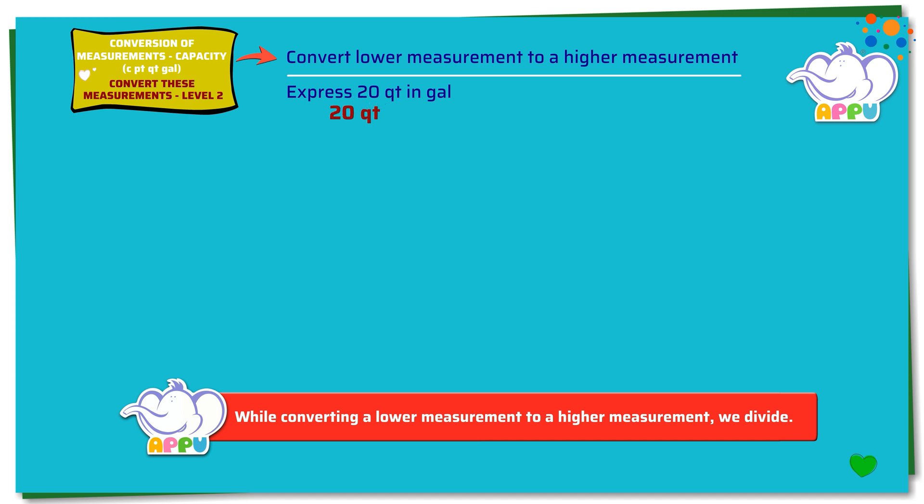Here we need to find how much is 20 quarts in gallons. We know that 4 quarts equals 1 gallon. Dividing both sides by 4, we get 4 quarts by 4 equals 1 gallon by 4. 4 divides 4 once.